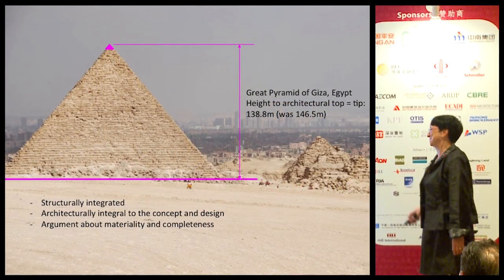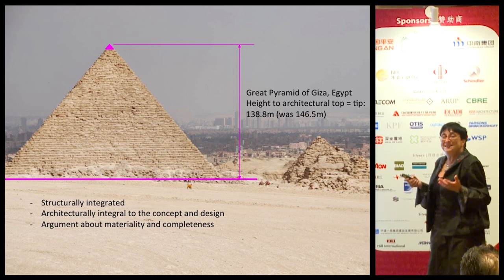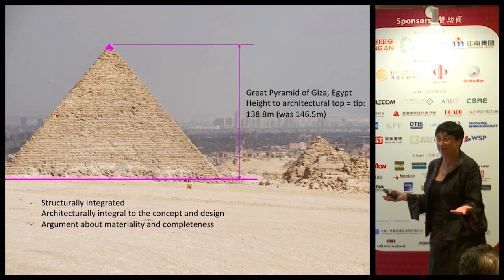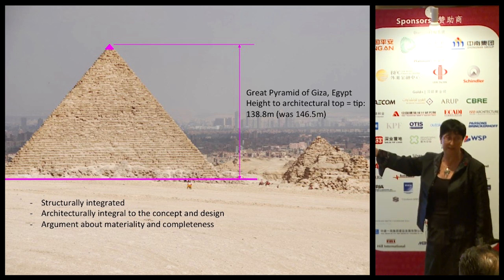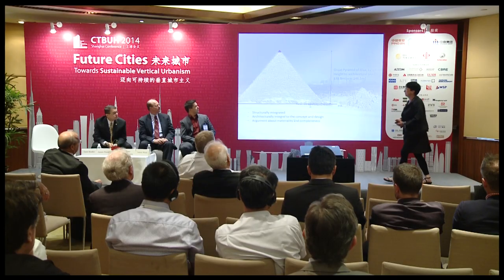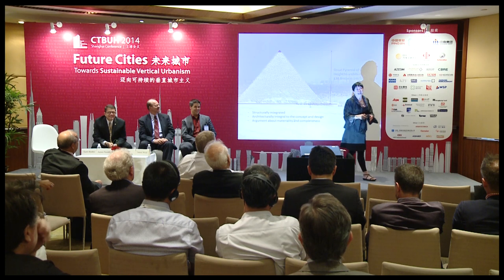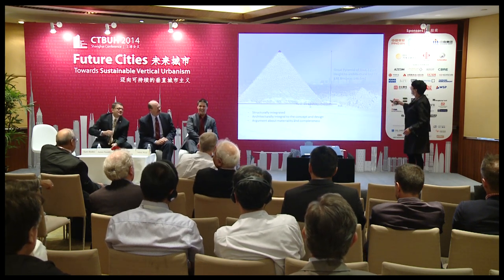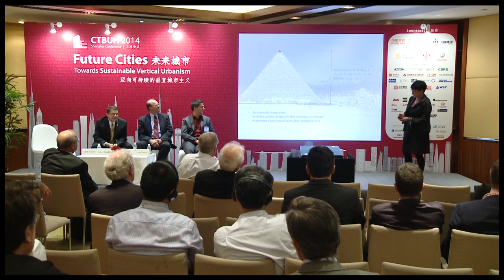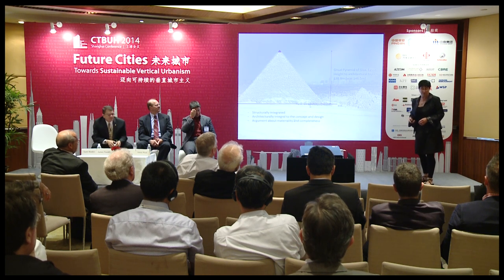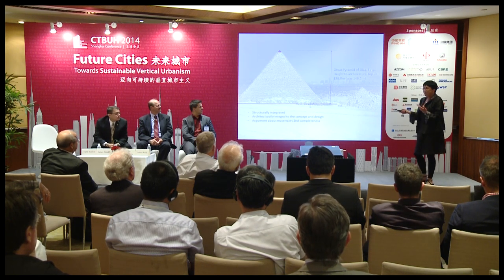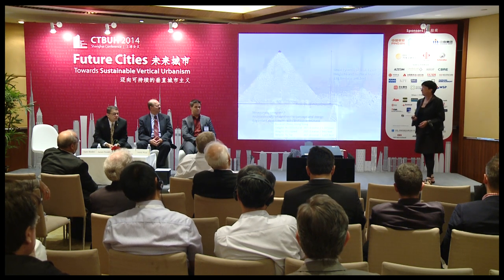I wanted to go back to the beginning: what is the essence of measuring height? Before we had materials with tensile capabilities, we had compressive materials, and the height was pretty clear as to what was the top. The tip and the architectural top were one and the same. One of the things that has happened with this building over time — because they stole all the stone off the outside — it's actually a little bit shorter. So you can actually have a tall building that gets shorter over time, and of course then the sand drifts.